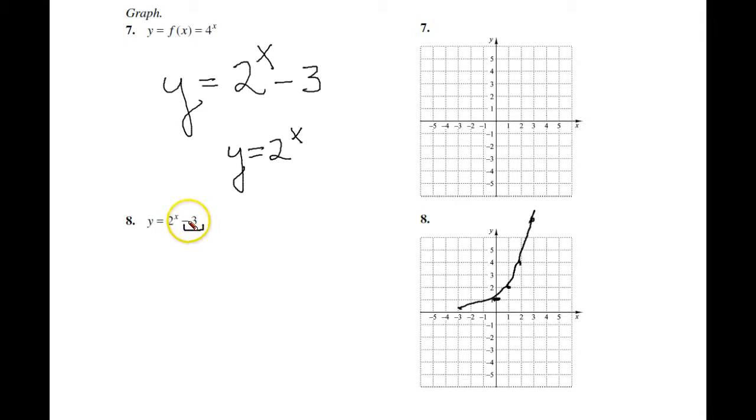Now, when it has a negative three here, again, giving you an idea how to sketch this, it's just going to drop this down from this one, one, two, three. It's going to go right there. And it's going to have basically that same curve and then way up there so that your new asymptote down here is going to be y equals negative two. And you can see it's a similar curve. It's just that it's been dropped down.